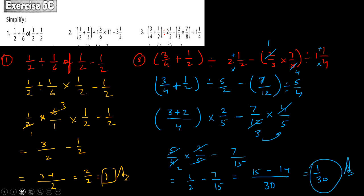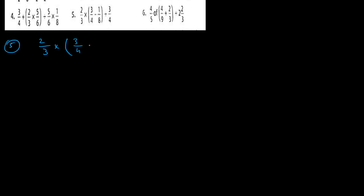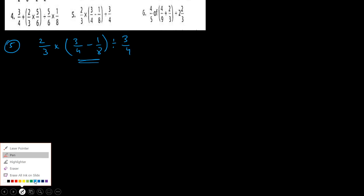Now let us solve Question number 5: 2 upon 3 multiply, in bracket, 3 upon 4 minus 1 upon 8, bracket close, divided by 3 upon 4. First we have to solve the bracket, so let us solve the bracket now.